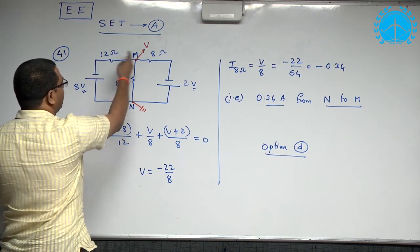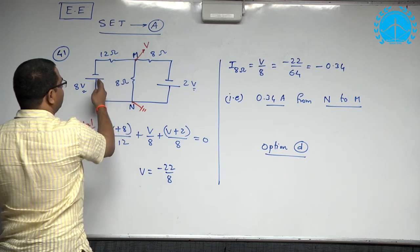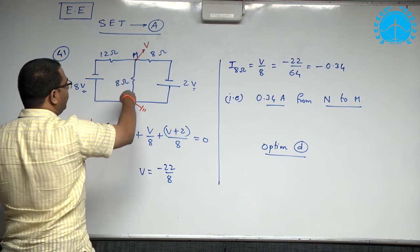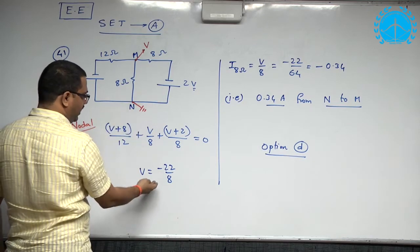So I did the nodal equation Kirchhoff current law, V minus of minus 8 by 12, that is V plus 8 by 12, V by 8, V plus 2 by 8, I got V negative.